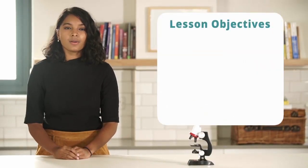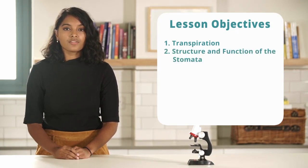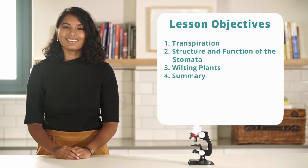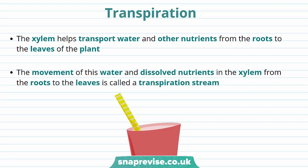In this video we'll be discussing transpiration, the structure and function of the stomata, wilting plants, and finally a summary. Unlike animals, plants don't have hearts, which means they can't pump substances around. Instead, they use transpiration and translocation. Let's talk about transpiration first.